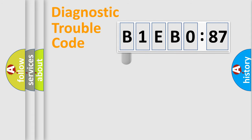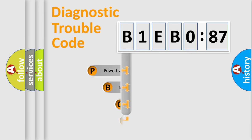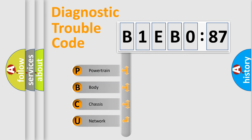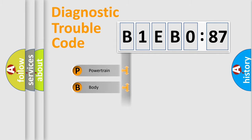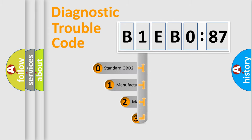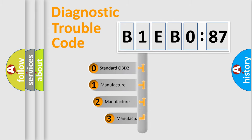First, let's look at the history of diagnostic fault code composition according to the OBD2 protocol, which is unified for all automakers since 2000. We divide the electric system of the automobile into four basic units: Powertrain, Body, Chassis, and Network. This distribution is defined in the first character of the code.